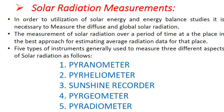For the utilization of solar energy and energy balance studies, it is necessary to measure diffuse and global solar radiation. Five types of instruments are generally used to measure three different aspects of solar radiation: pyranometer, pyrheliometer, sunshine recorder, pyrgeometer, and pyradiometer.